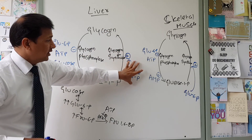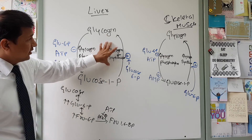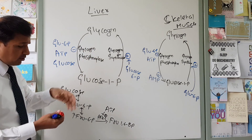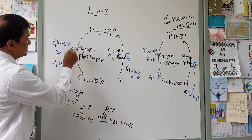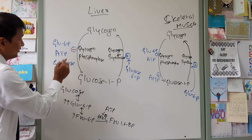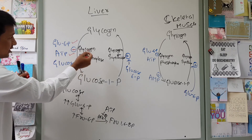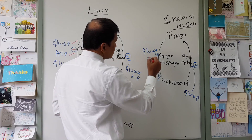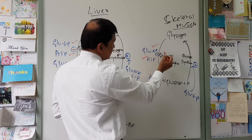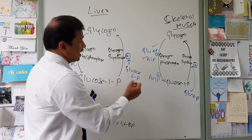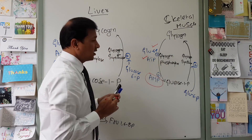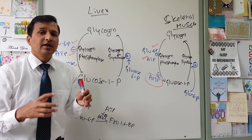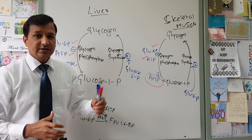To summarize allosteric regulation: glycogen synthase is positively modulated by glucose 6-phosphate in both liver and skeletal muscle. Glycogen phosphorylase is negatively modulated by glucose 6-phosphate, ATP, and glucose in the liver, whereas in skeletal muscle it is negatively modulated by glucose 6-phosphate and ATP only — not glucose — and AMP is a positive modulator on glycogen phosphorylase in skeletal muscle.